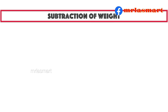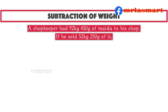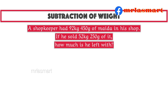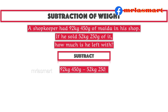Subtraction of weight. A shopkeeper had 92 kilograms 450 grams of maida in his shop. If he sold 52 kilograms 250 grams of it, how much is he left with? Subtract 92 kilograms 450 grams minus 52 kilograms 250 grams.